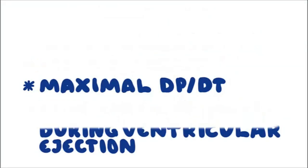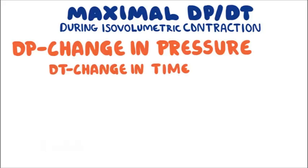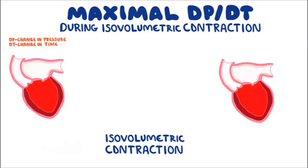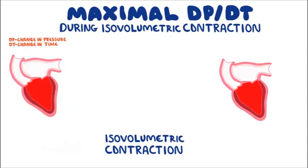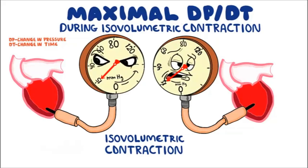The second index of contractility is maximal dp/dt during isovolumetric contraction. dp is the change in pressure and dt is the change in time. Isovolumetric contraction is the early period of systole, in which the ventricle contracts as a closed chamber because all valves are closed. The ejection phase begins only when a certain pressure is reached to cause valve opening. A pressure measuring device is placed in both ventricles to observe how ventricular pressure changes during isovolumetric contraction — that is what dp/dt means.